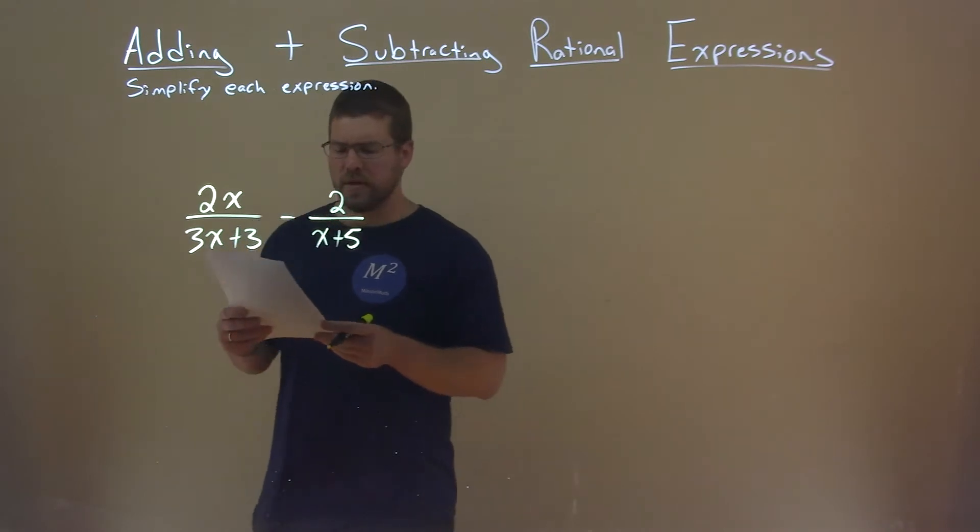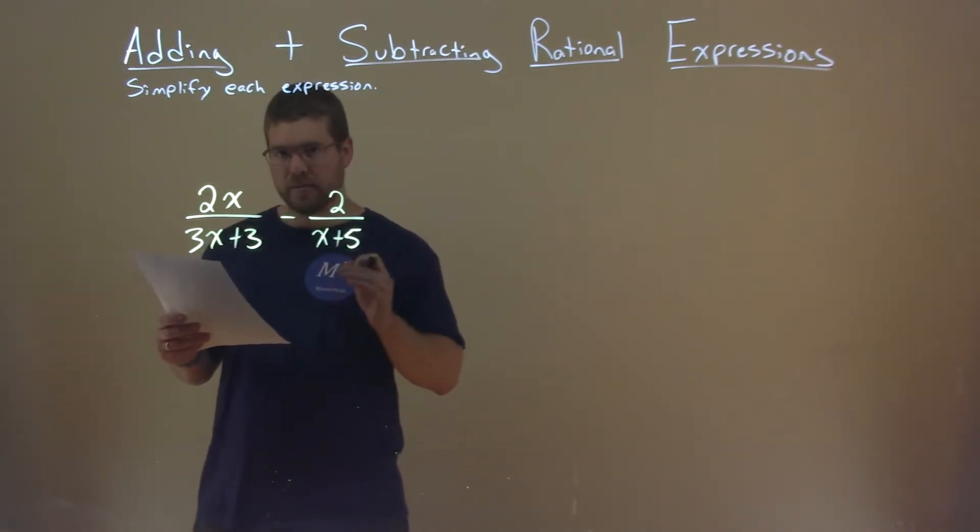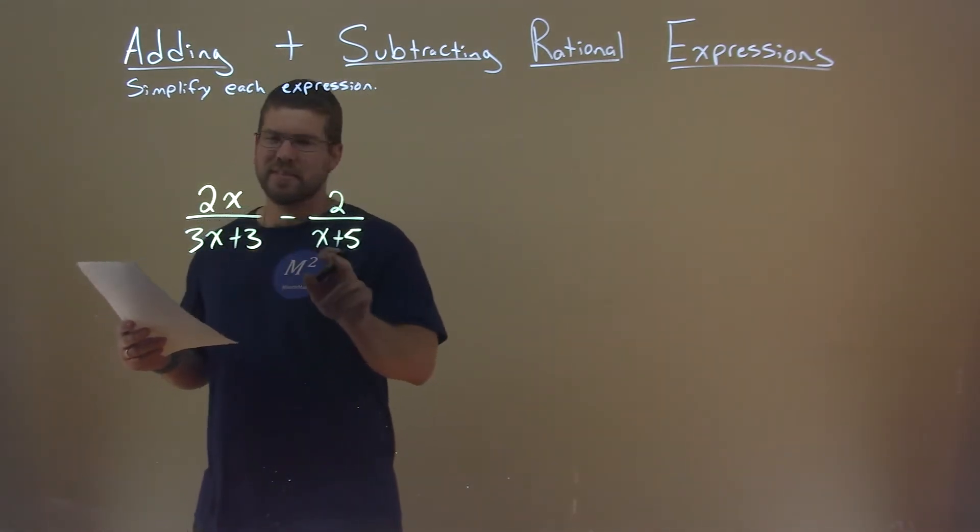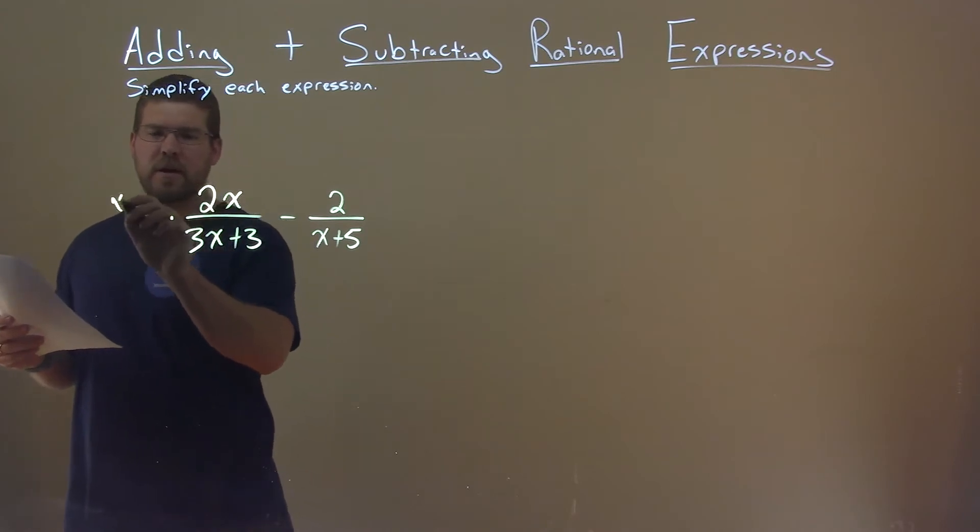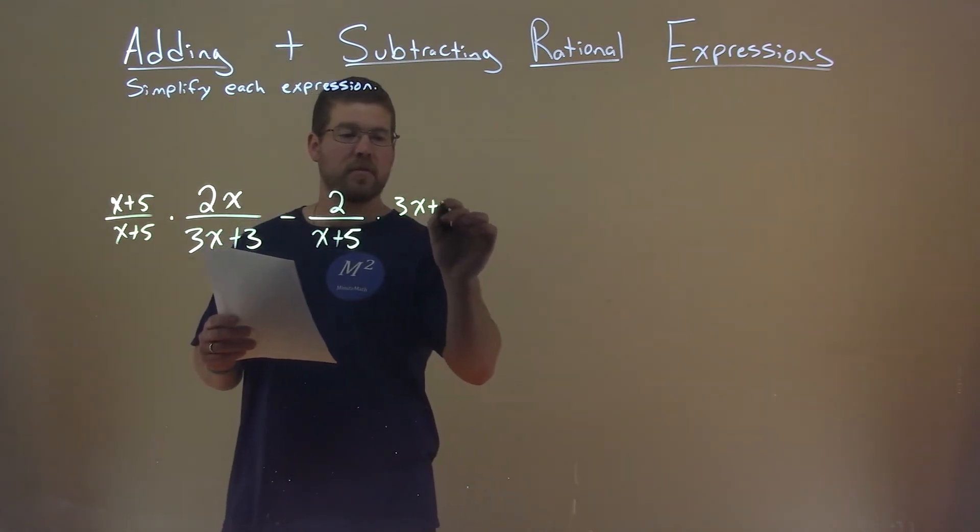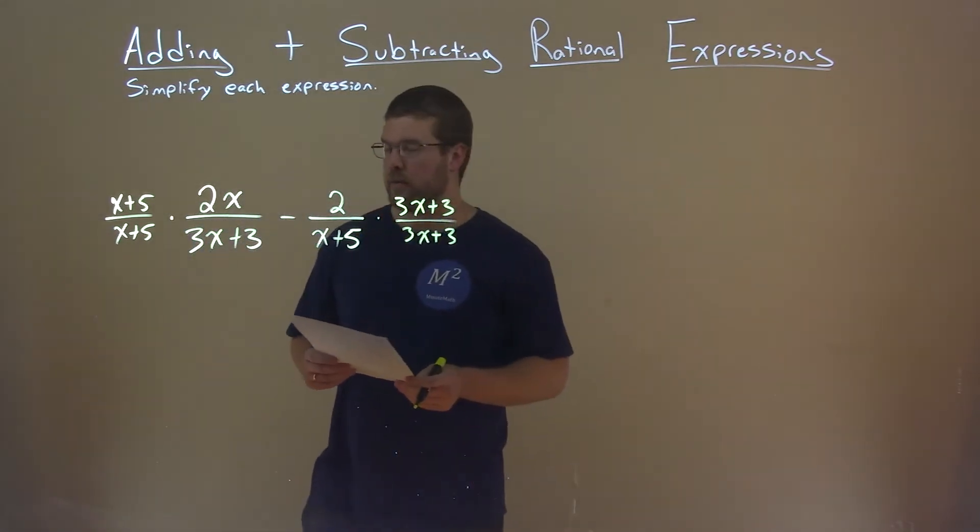What I want to do here is have a common denominator starting out. These clearly aren't the same, but if I multiply the first fraction by x plus 5 over itself, and the second fraction by 3x plus 3 over itself, I'll have a new denominator of x plus 5 times 3x plus 3.